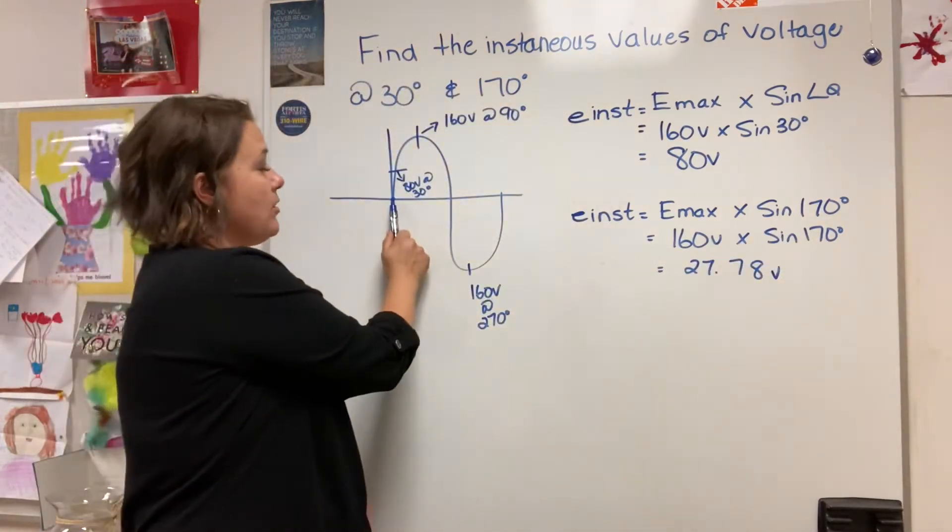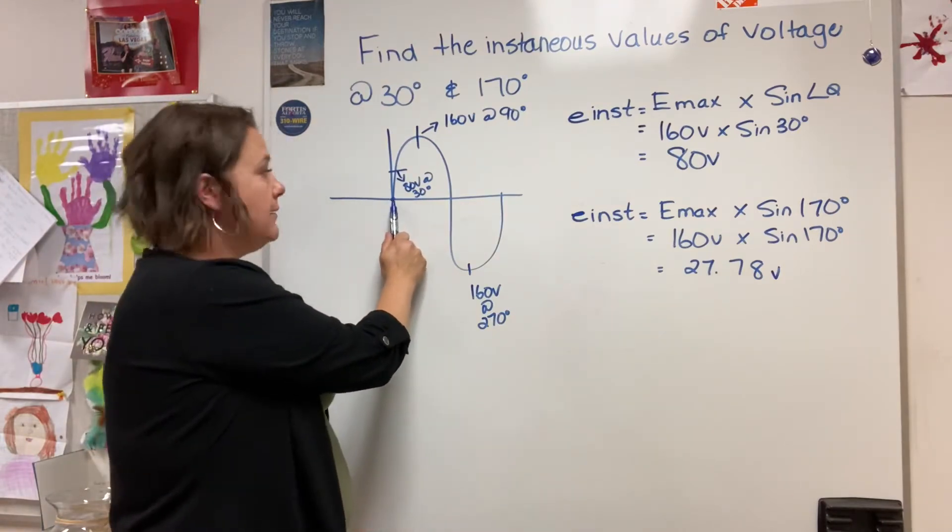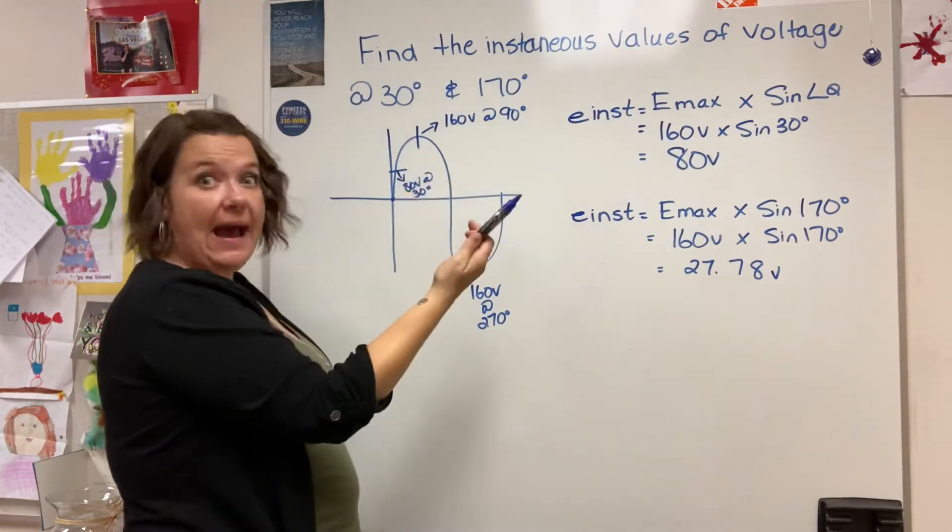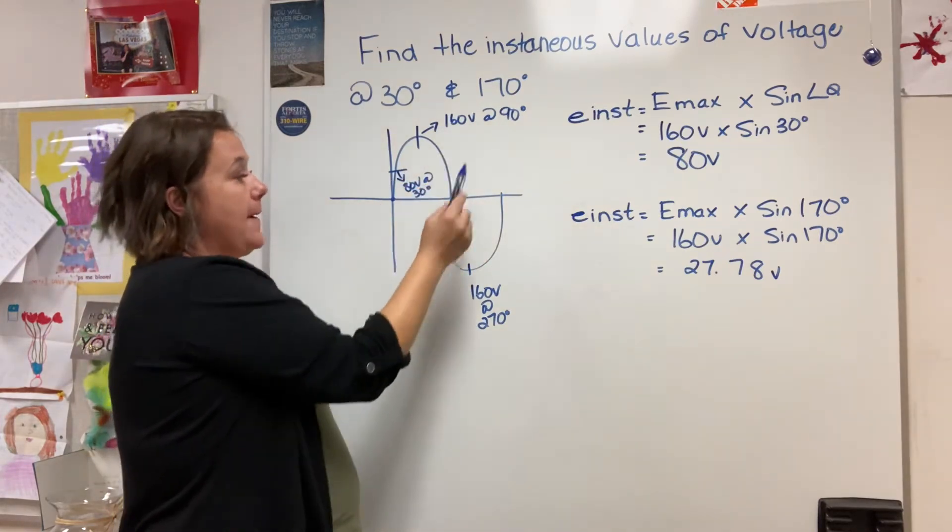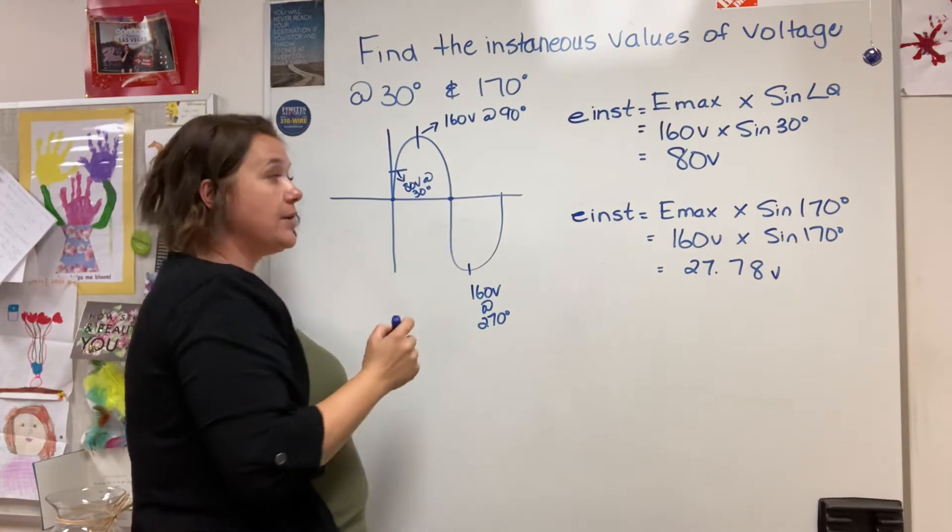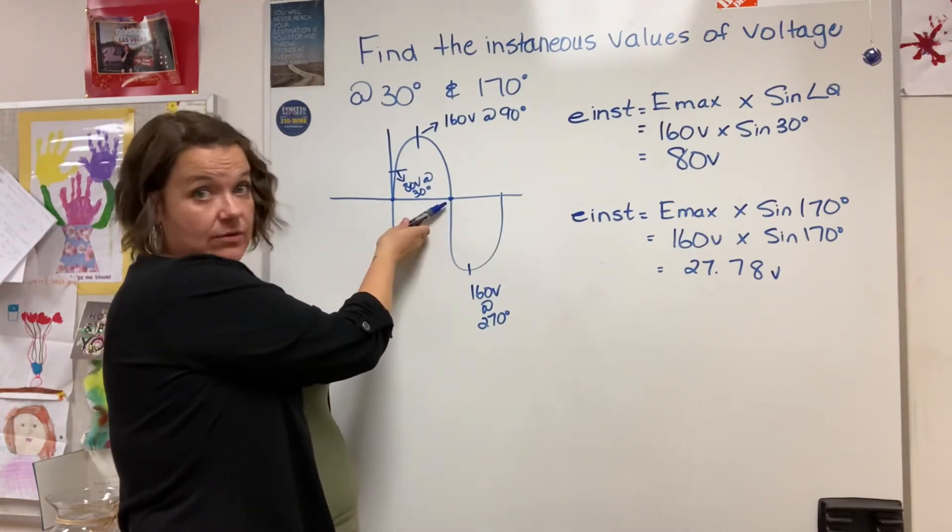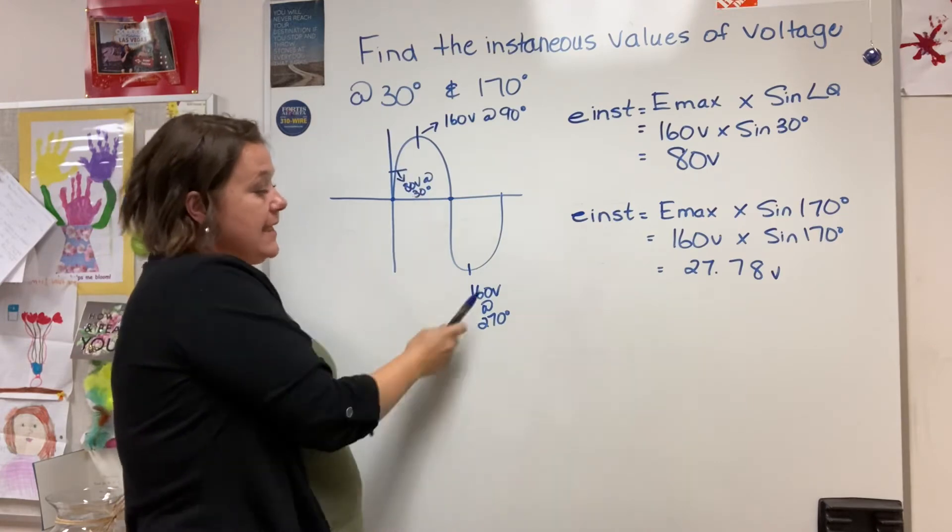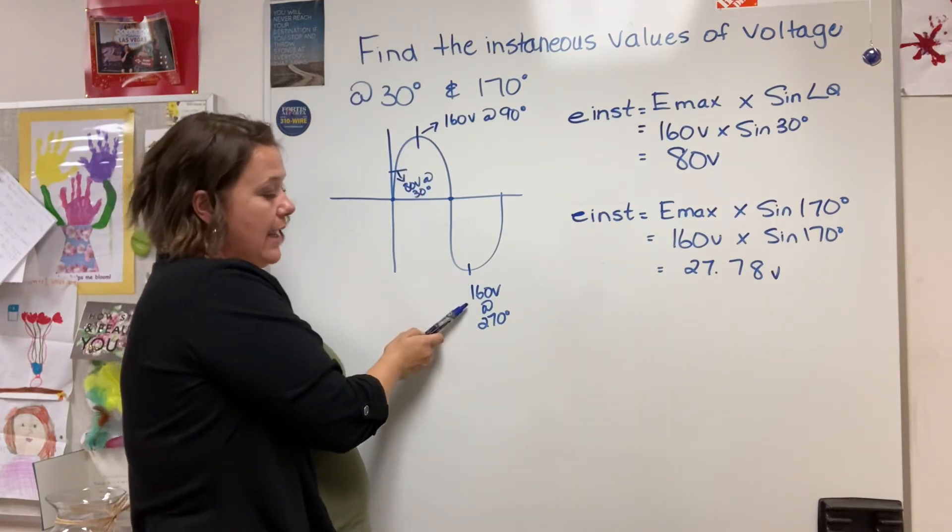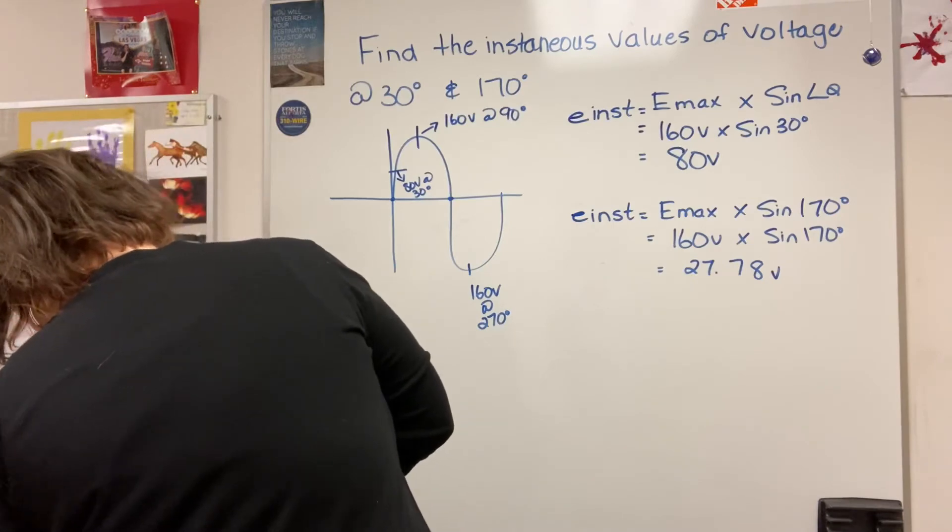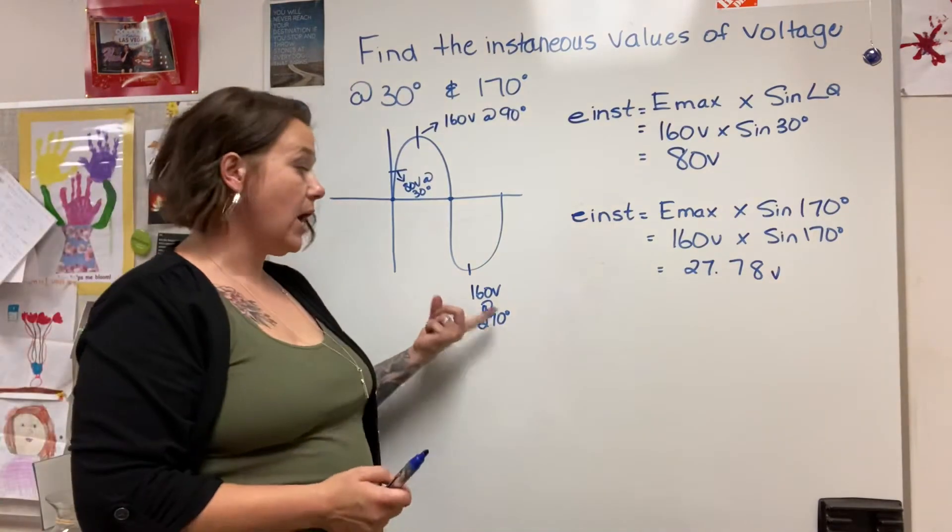At zero we're generating minimum to none, negligible amount of voltage. 90 degrees we're generating maximum 160 volts. Back down here we're hitting 180 degrees of the sine wave, generating again zero volts minimum, negligible. Then here at 270 degrees, we are generating 160 volts.